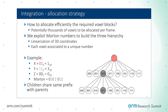We have a particular strategy based on Morton numbering. For those familiar with space-filling curves, this is not new. The easiest way to think about Morton numbers is as a linearization of three-dimensional coordinates. Given a three-dimensional position x, y, z, you combine those three coordinates into one single number which uniquely identifies the voxel. If you look at the bit patterns of the x, y, and z coordinates and interleave them, you get that number.